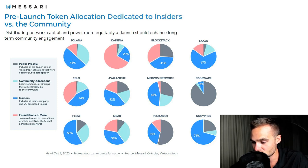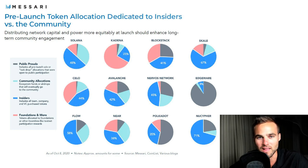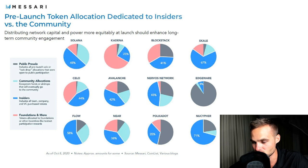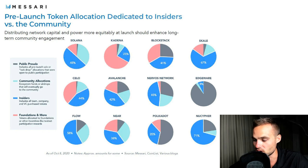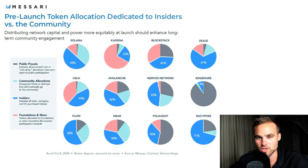Looking at Solana, for example, you can see that 48% of all the tokens were actually given to insiders. This can be a red flag — I'm not saying it doesn't make the project good, there are many other factors to analyze — but it is interesting that nearly half the supply is from insiders. If you take a look at Kadena, only 23% was allocated to insiders. Cello: 44%, Avalanche: 42%, Flow: 58%, Near: 38%.